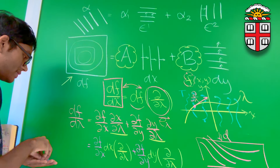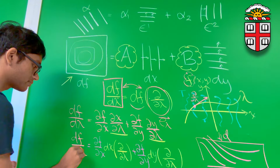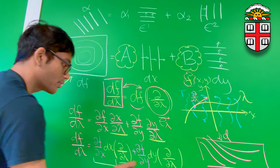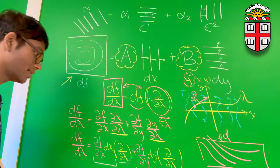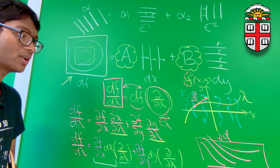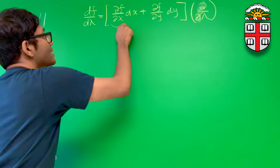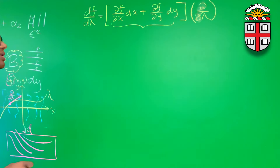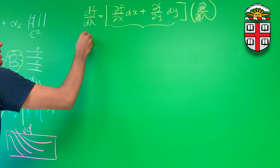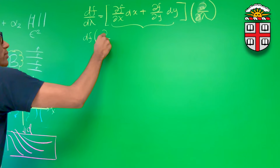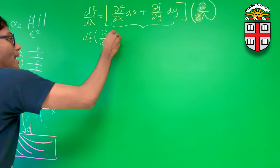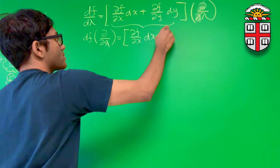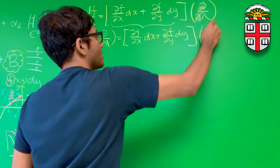The full derivative df/dλ can be rewritten. Noticing that ∂/∂λ appears on both sides and these operators are both acting on the same vector ∂/∂λ, I factor it out: df/dλ = [(∂f/∂x)dx + (∂f/∂y)dy](∂/∂λ). Rewriting the left-hand side as my co-vector field df acting on ∂/∂λ, I get: df(∂/∂λ) = [(∂f/∂x)dx + (∂f/∂y)dy](∂/∂λ).